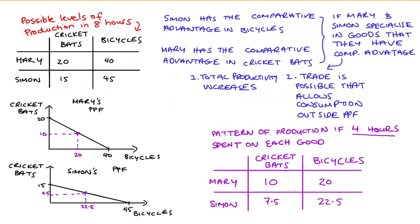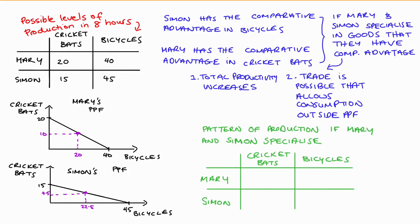Let's now think about what would happen if Mary and Simon completely specialized in the production of those goods in which they have the comparative advantage. We have a new table: Mary would only make cricket bats, spending the whole eight hours on cricket bats, which means she would make 20 cricket bats. Simon would only make bicycles — that would be 45 bicycles.